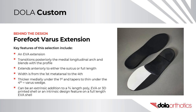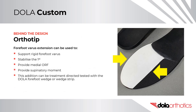Key features of a forefoot varus extension include: it is an EVA extension that transitions posteriorly from the medial longitudinal arch and blends with its profile, extending anteriorly to either the sulcus or full length. Its width runs from the first metatarsal to the fourth, thick under the first tapering to thin under the fourth, equalling a varus wedge. It can be extrinsic to a three-quarter length poly, EVA, or 3D printed shell, or intrinsic on a full-length EVA shell. Treatment-directed testing with a Dollar forefoot wedge or wedge strip is recommended.